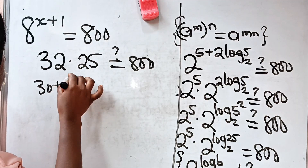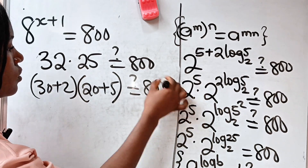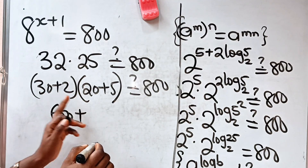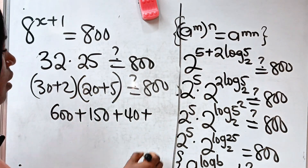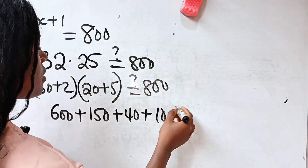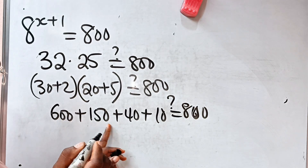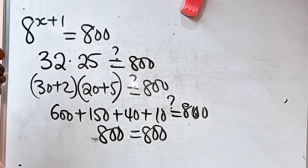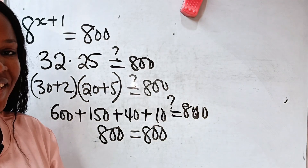Now, 32 is the same as 30 plus 2, and 25 is the same as 20 plus 5. So 30 times 20 is 600, 30 times 5 is 150, 2 times 20 is 40, and 2 times 5 is 10. Adding these: 600 plus 150 plus 40 plus 10 equals 800. You can see that the left-hand side is equal to the right-hand side, and that proves that the answer we got is correct. Thank you for watching. I hope to see you next time. Bye.